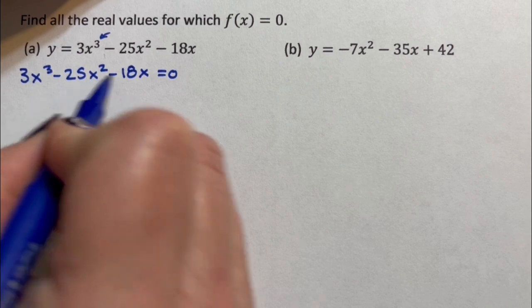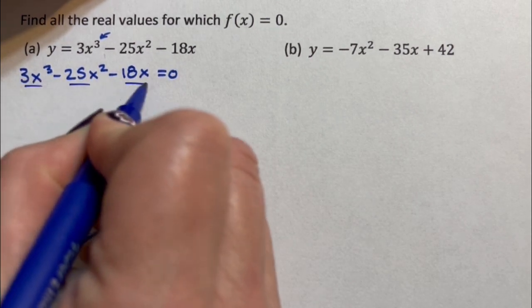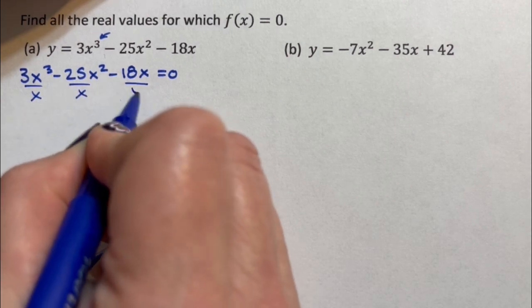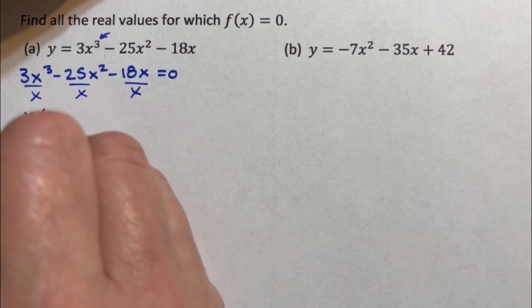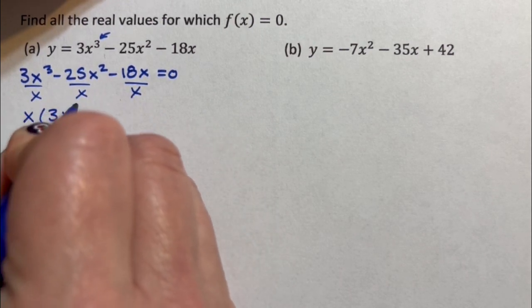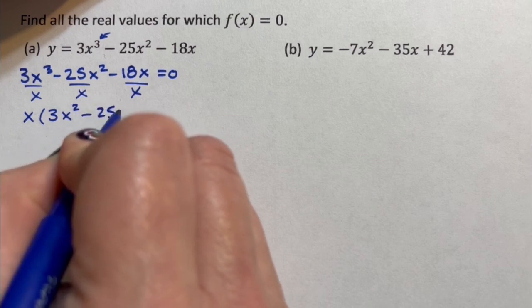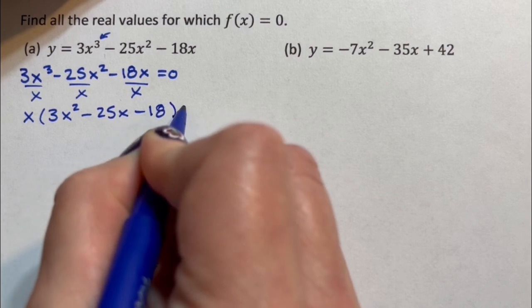I'm going to notice that every term has an x, so I'm going to start by dividing everything by x. If this 25 were a 24, I would also divide through by three, but it is a 25, which means I cannot divide through by the three because I don't want to give myself fractions. Fractions are going to make this process harder.